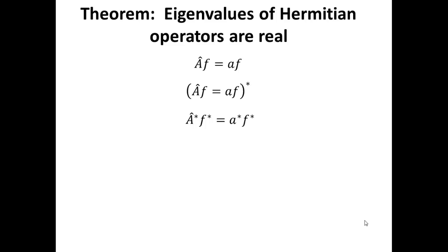So now we have the complex conjugate of the operator a acting on the complex conjugate of the function f. And that's returning the complex conjugate of a and the complex conjugate of the function f. Since we're interested in only Hermitian operators, these are the operators that show up in quantum mechanics, we can use their unique property.